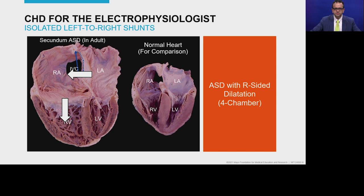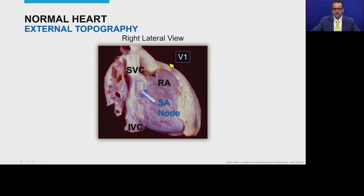It is also common that in patients with ASD you have an RSR' pattern in lead V1. The reason we get that right bundle branch delay pattern is because of the large volume of blood coming into the right ventricle, which enlarges the right ventricular outflow tract. The last part of the heart to get activated in the right ventricle is the RVOT. As RVOT dilates from volume overload, this manifests as delayed conduction picked up by V1 — hence right bundle branch delay or incomplete right bundle branch block. There is nothing actually wrong with the true right bundle branch conduction.